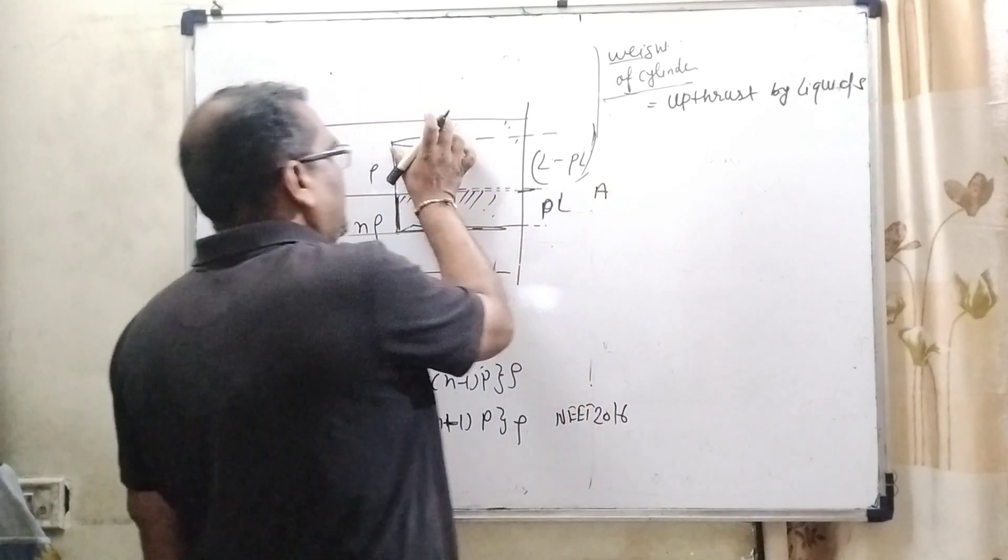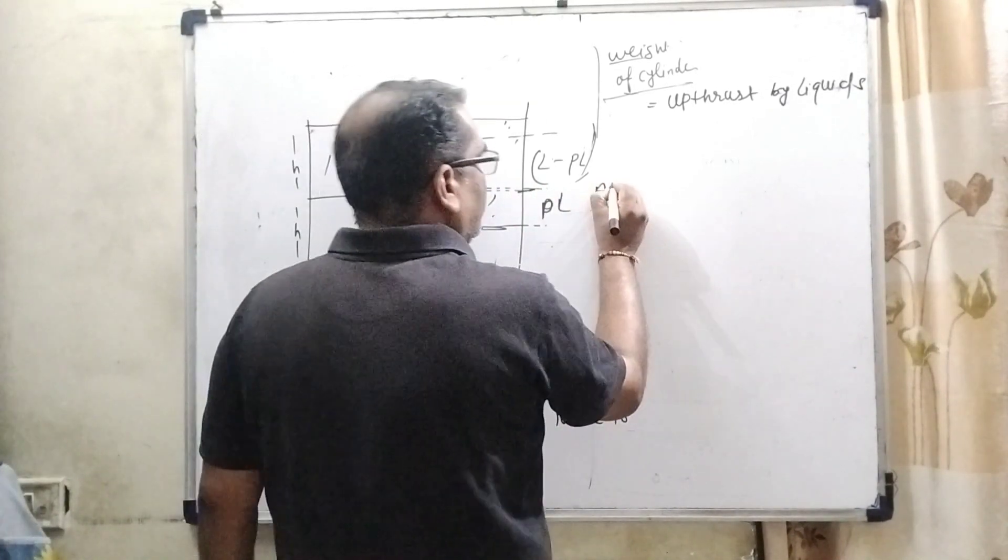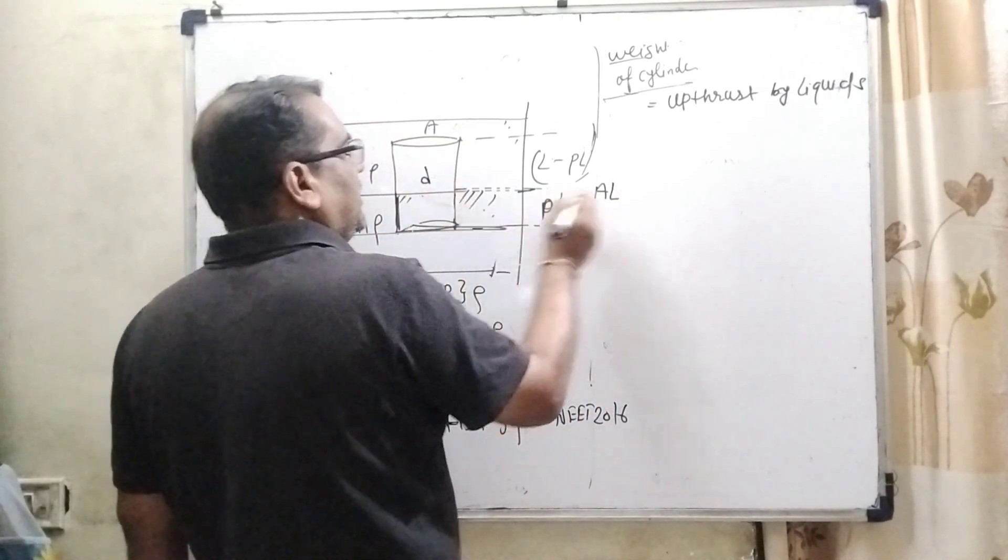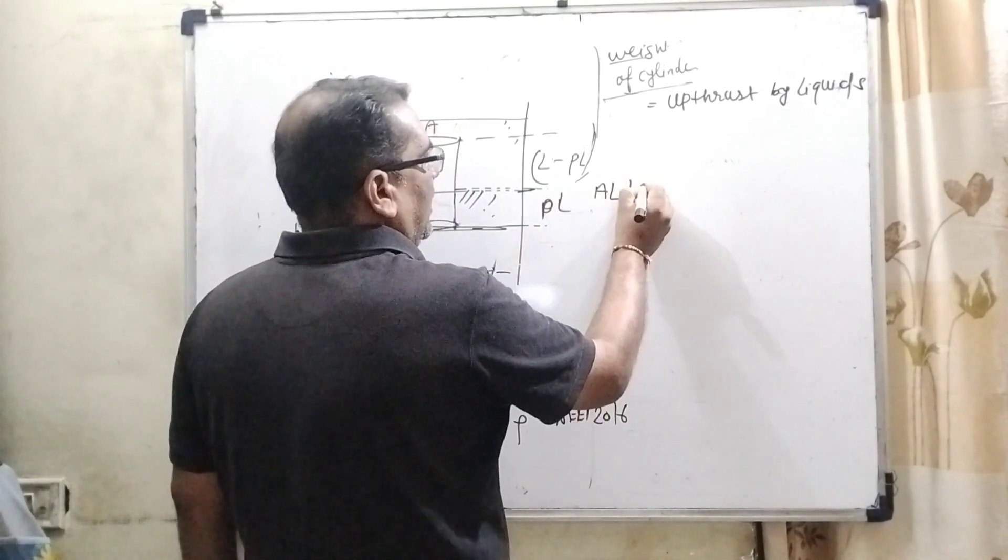What is the weight of the cylinder? Area of cross-section is given A, total length of the cylinder is L, density is given as d, and g.